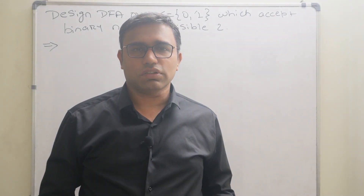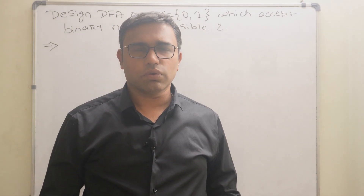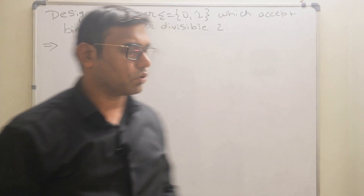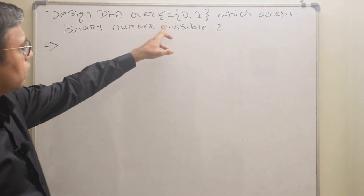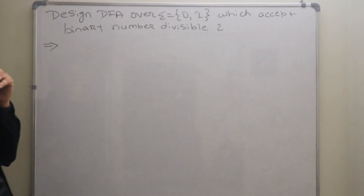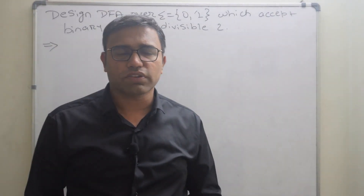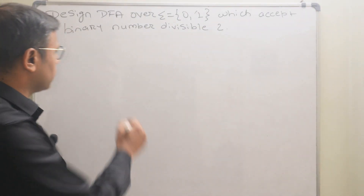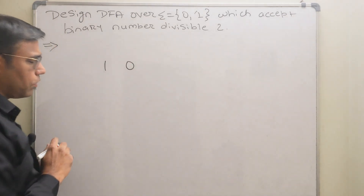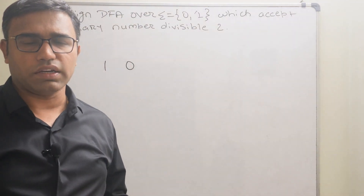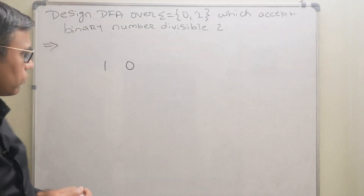The topic of this video is construction of deterministic finite automata. We'll see how to construct the DFA for the given question: design a DFA over input symbol {0, 1} which accepts binary numbers divisible by 2. We have to construct the DFA which will accept binary numbers divisible by 2. First, I will write the possible binary numbers and then we'll see how to construct the DFA.